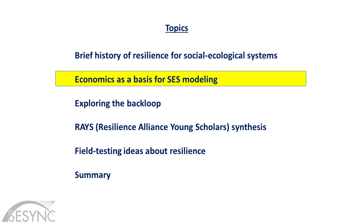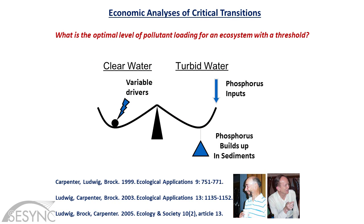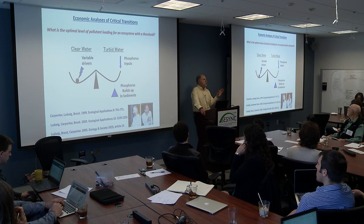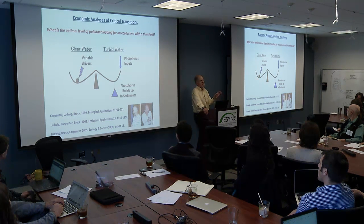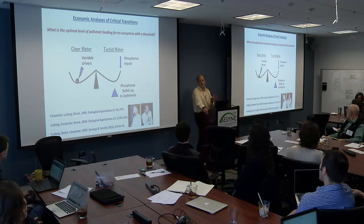At about the same time Francis was running those workshops, I developed a collaboration with an economist and a mathematician — William Brock, a mathematical economist at UW Madison, and Don Ludwig, a mathematician from the University of British Columbia. At the time we did the work, notions of alternate states, which are pretty prominent in ecology, had not really penetrated economics, and we felt that traditional economic benefit-cost analyses were really missing something by not considering alternate states. So we wrote a series of papers on the economic implications of alternate states.